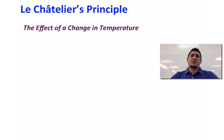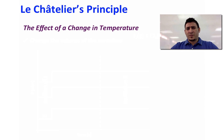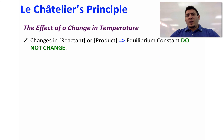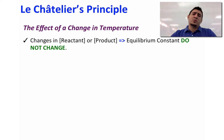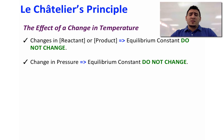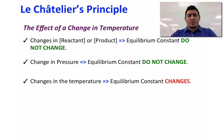Now let's discuss the effect of a change in temperature. A change in the concentration of reactants or products will change the equilibrium position but will not change the equilibrium constant value. Similarly, changing the pressure will change the equilibrium position but not the equilibrium constant value. However, a change in temperature will change the equilibrium position and will also change the equilibrium constant value.